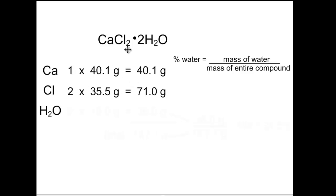There's 2 chlorines, because in the formula there's 2, so 2 times its molar mass, 2 times 35.5 is 71.0.